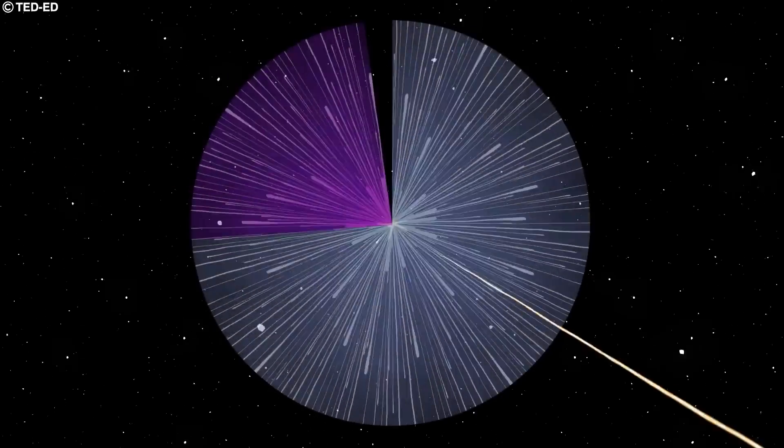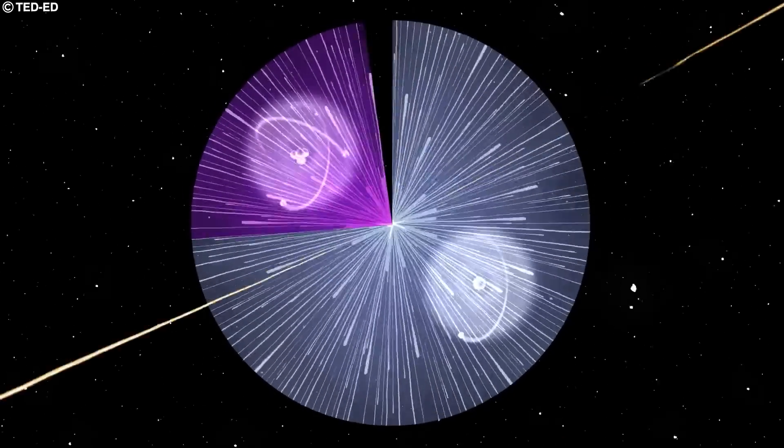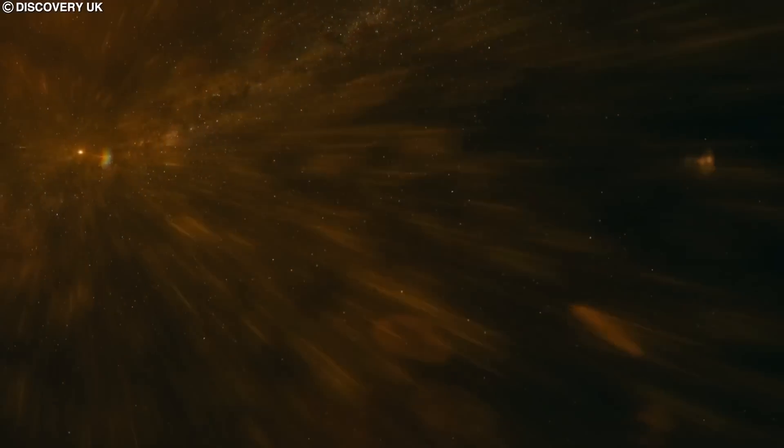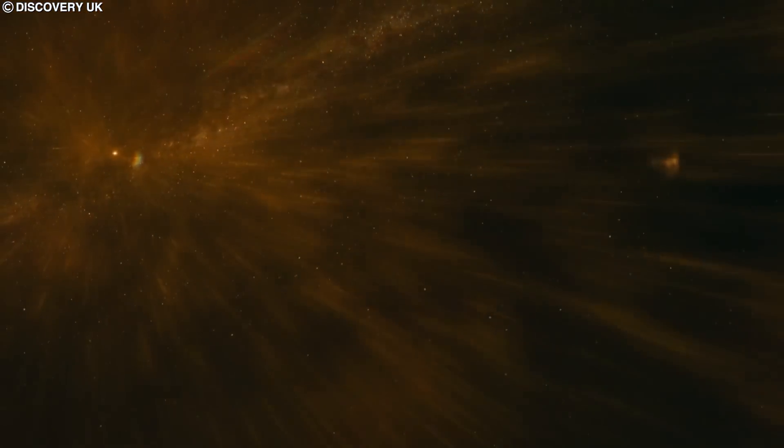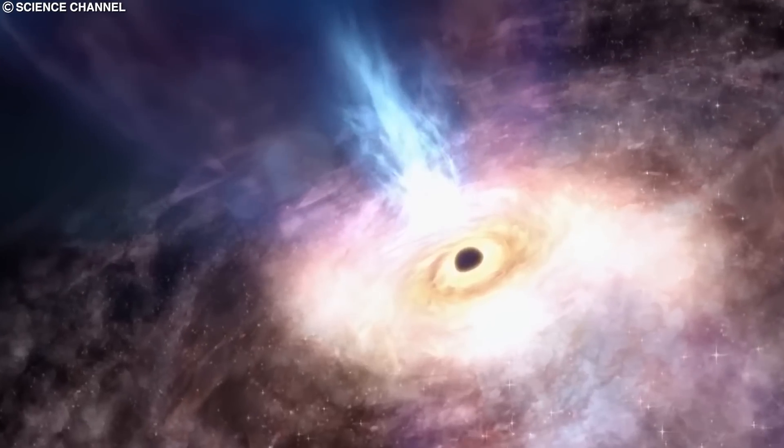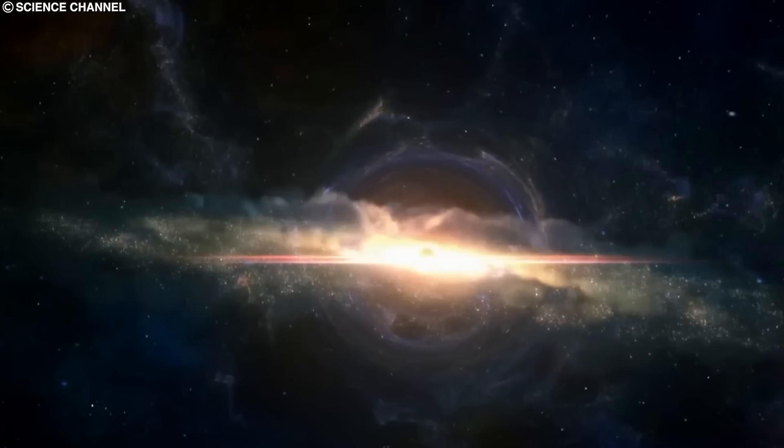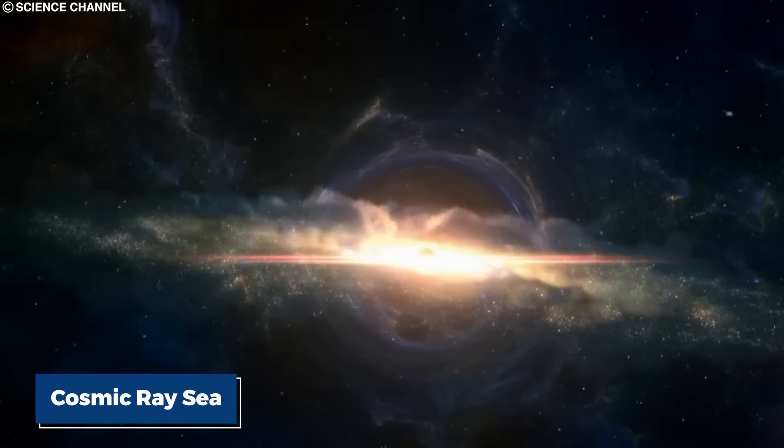These cosmic rays are constantly flowing through the magnetic field of our galaxy, creating an invisible potion of high-density particles, all of which have roughly uniform density throughout the entire Milky Way. This constant flow of particles is called the cosmic ray sea.